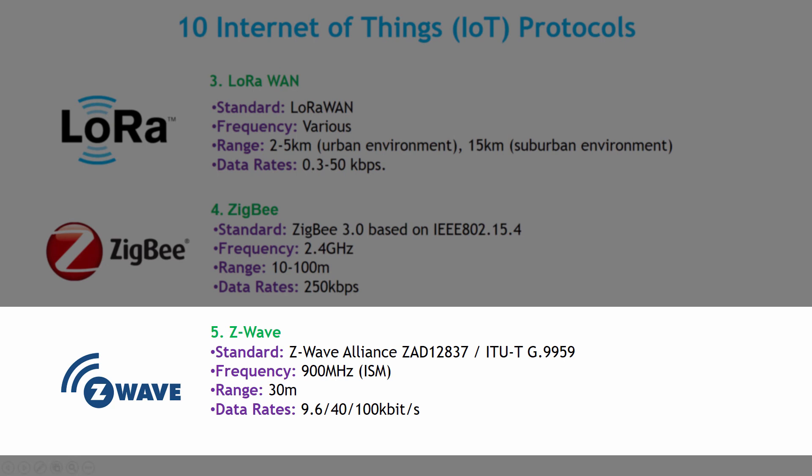Z-Wave is especially optimized for reliable and low-latency communication of small data packets, with a data rate up to 100 kbps. It operates in the sub-1 GHz band and is impervious to interference from Bluetooth or ZigBee. It supports full mesh networks without the need for a coordinator node, and is very scalable, enabling control of up to 232 devices.